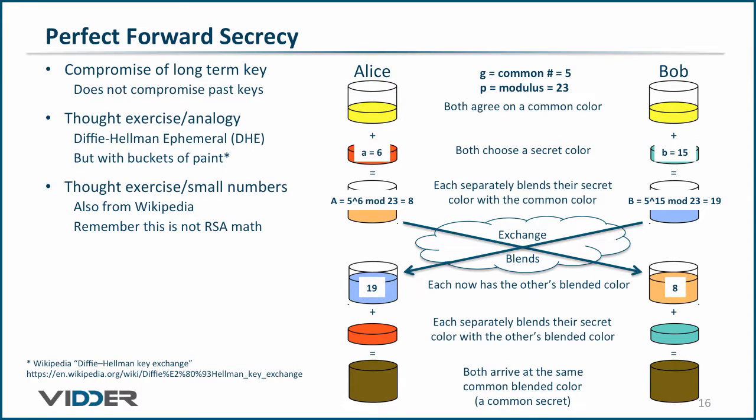Then, they exchange the blended numbers. Finally, each raises the blended number to the value of their secret number, ending up with a common number, 2.